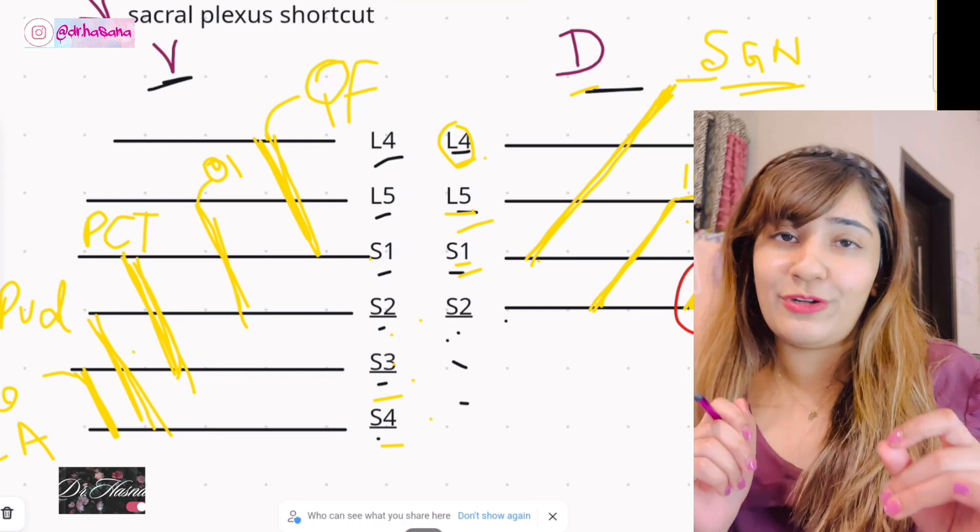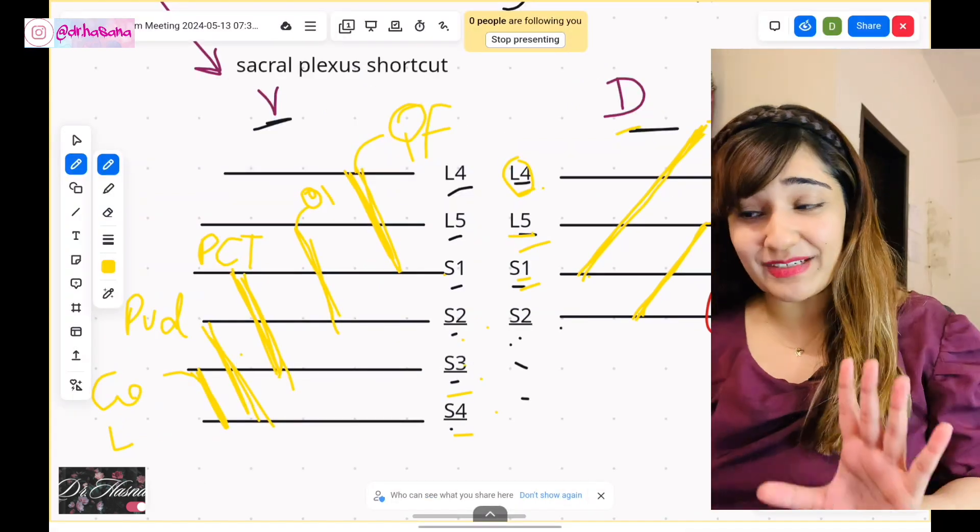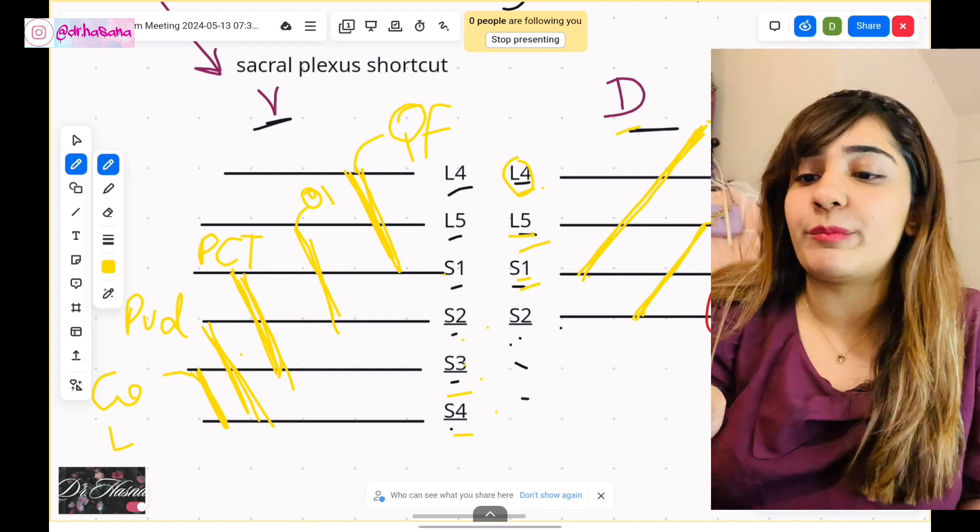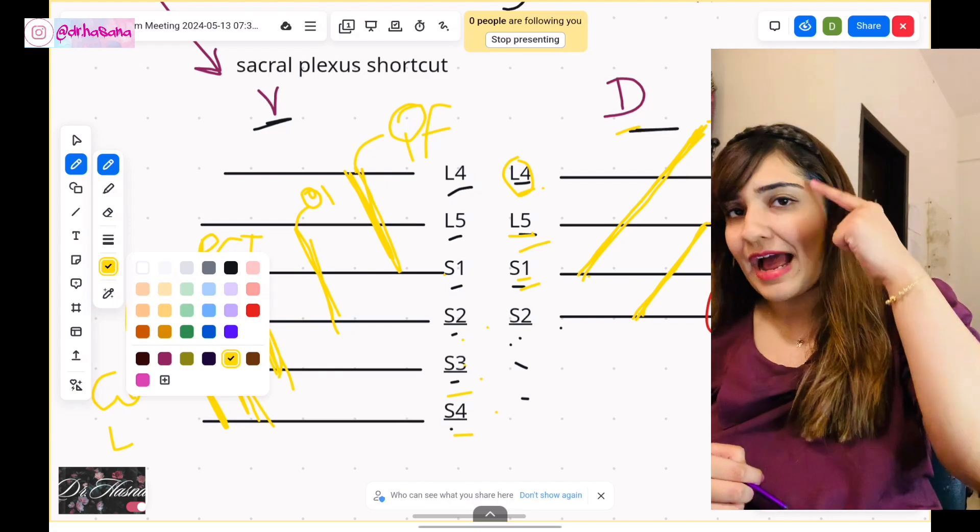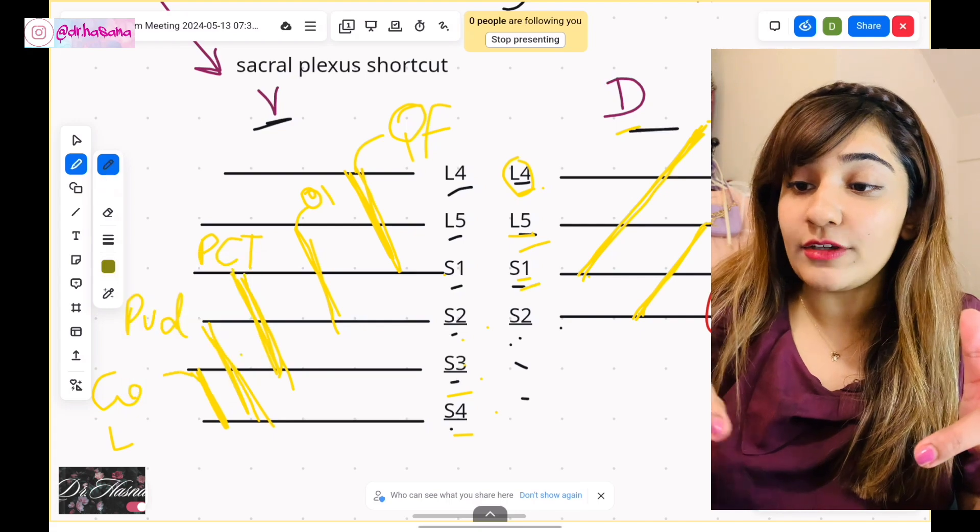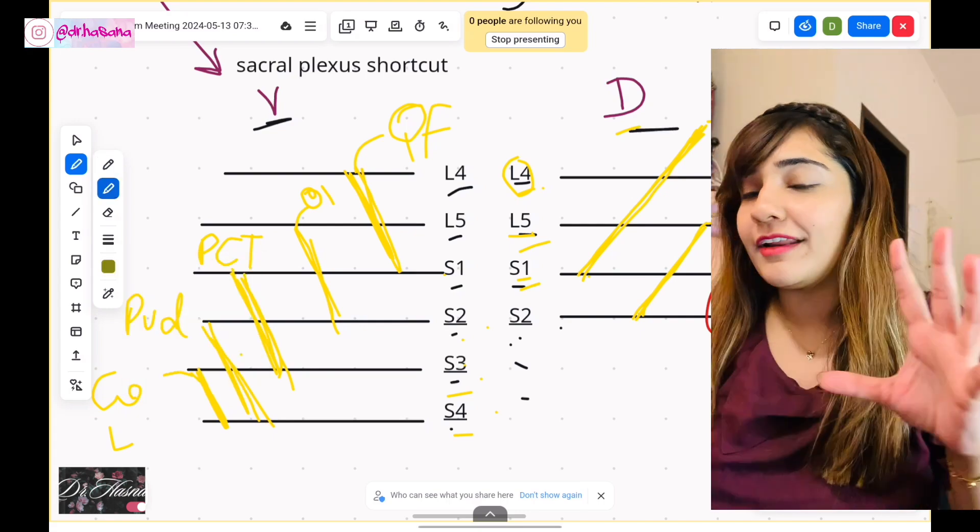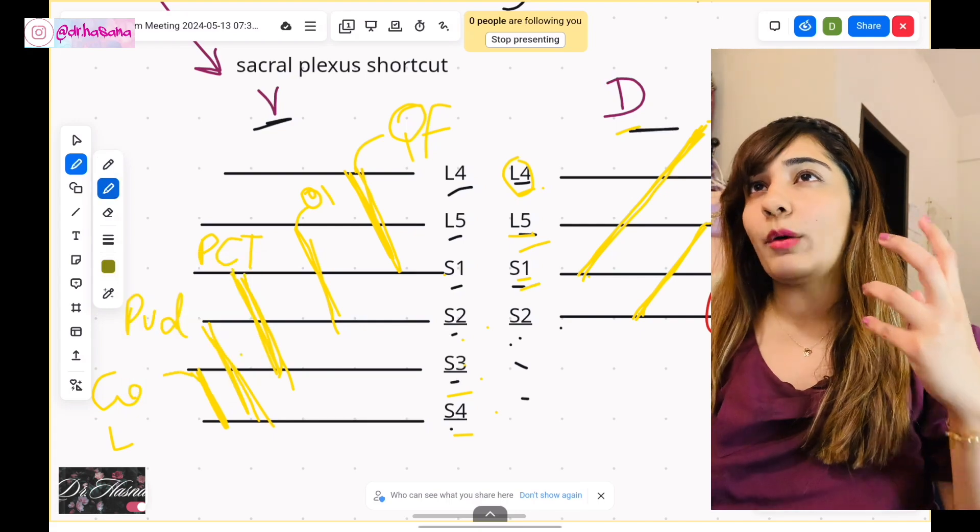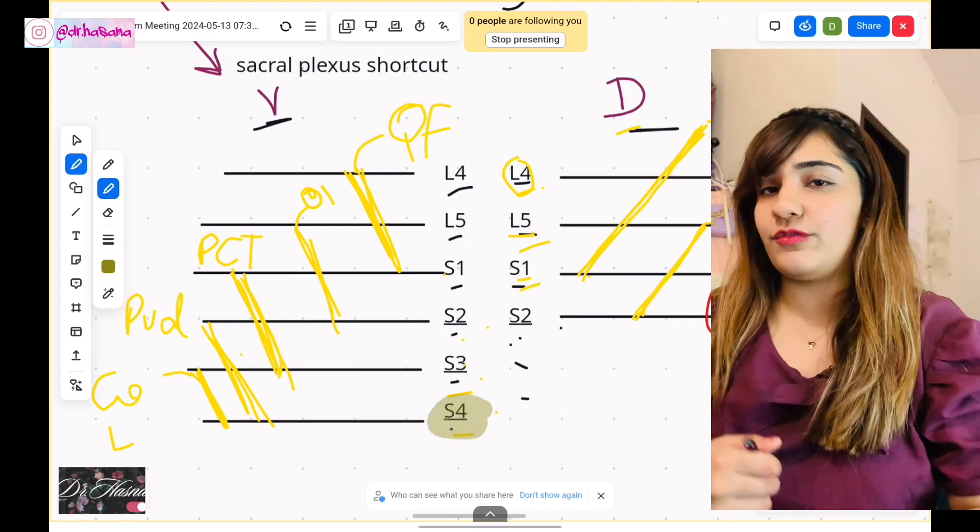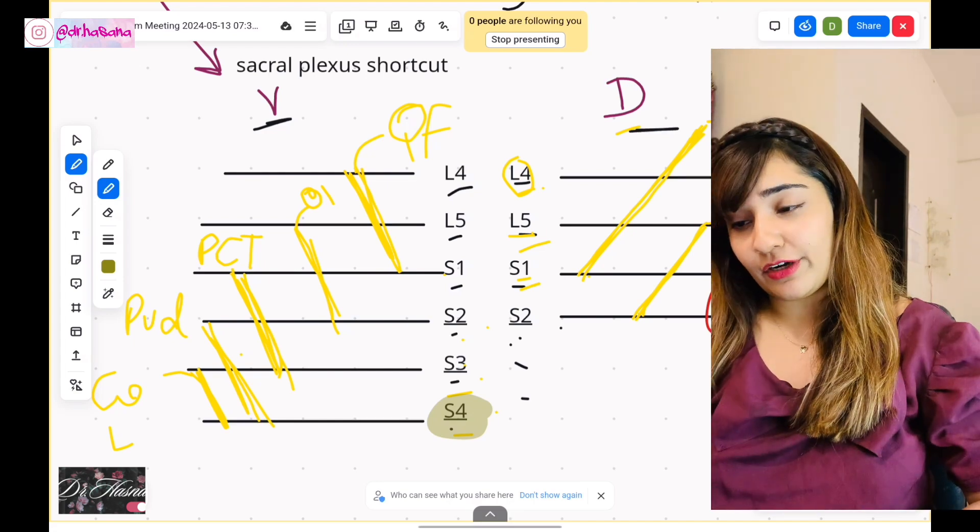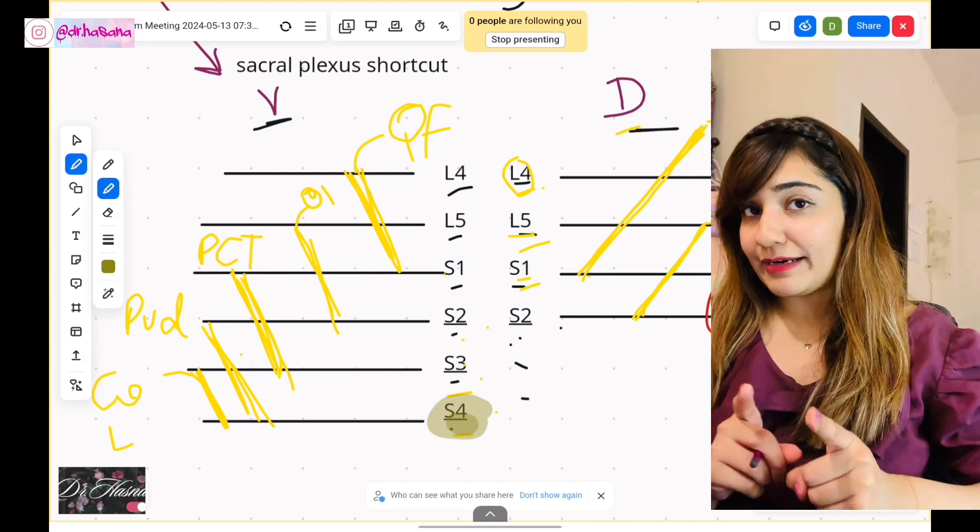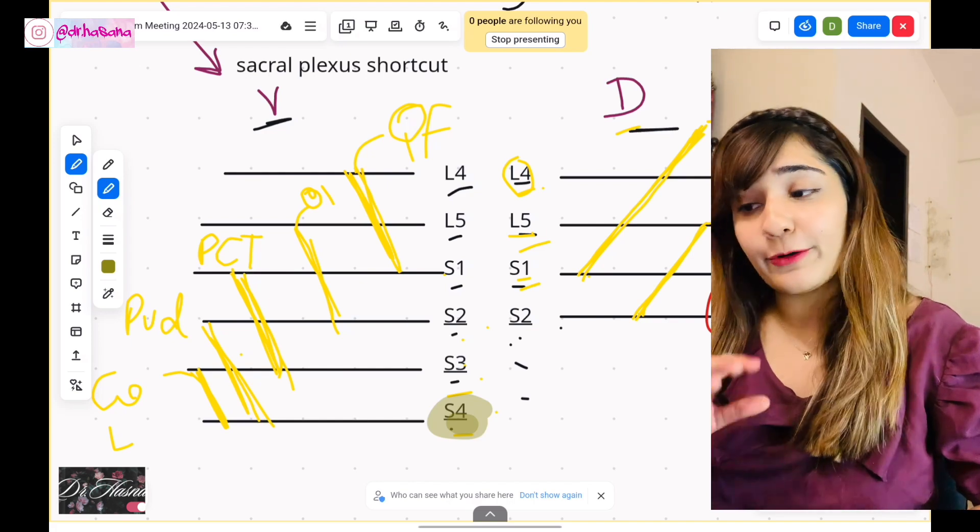Just when you think that the sacral plexus is over it is actually not, honey. Yeah it just got started, just kidding, there's just one last nerve that I want you to remember. So guys first what I want you to do is ditch S4, you know why? Because it doesn't deserve a place here, why? Because S4 is basically anatomy in real life. If you hate anatomy ditch it. By ditching S4 I had to do that so you guys remember.